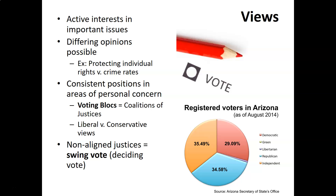That can cause a problem, but it also can be a benefit. When you have non-aligned justices — whether on a particular issue or not necessarily conservative or liberal — they can be what we call a swing vote. They could be the deciding vote in switching something from a 4-4 tie to a 5-4 decision.